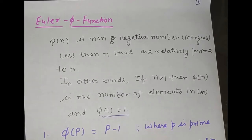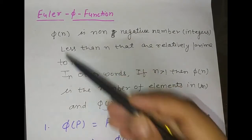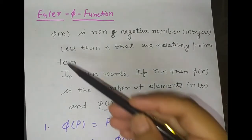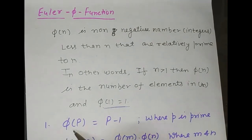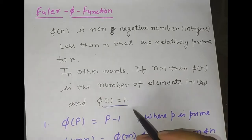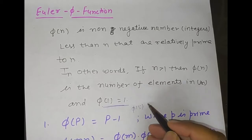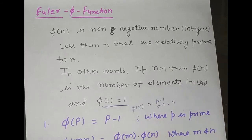These are some formulas for φ(n). The first formula is: if n becomes a prime number p, then φ(p) = p − 1, where p is a prime number. For example, φ(5) — 5 is a prime number, so the value is p − 1, that is 5 − 1 = 4.